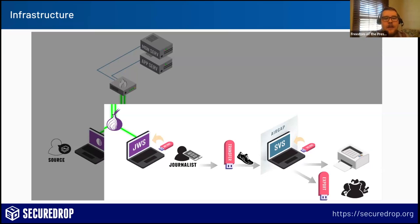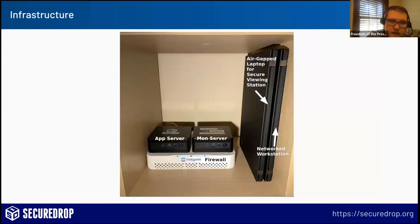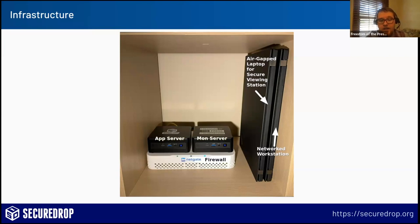I wanted to show you a visual to put this into a real-world application. This is an entire SecureDrop setup. We have two computers — the application server and the monitor server — running on small Intel NUC boxes. Below that is the network firewall, which looks like a home router. Beside it are two laptops: one with the wireless equipment removed so it can't connect to a network, used as the secure viewing station, and another normal laptop used to connect to SecureDrop and download submissions.